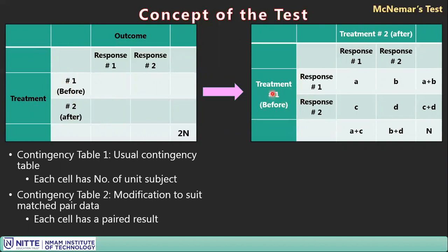Cell 'a' means the subject received both treatments and had response 1 in both cases. The other cells capture different response combinations across the two treatments. Because two treatments are done on the same subject, 2N becomes N — they are paired — and marginal sums are calculated in the usual way.